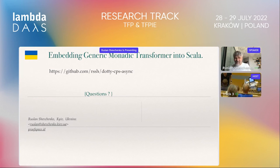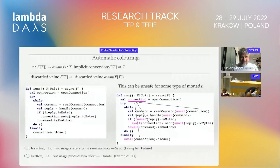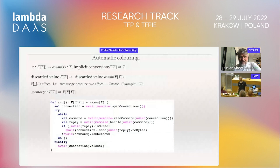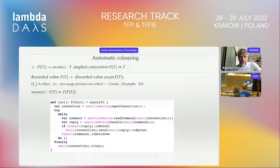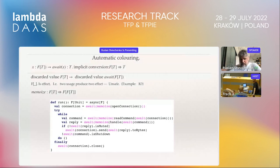Question: In the automatic colouring example, you used openConnection assigned to a local variable connection — as far as I understand, that assignment caused the connection to be memoized. If it wouldn't be assigned to a variable, if you would inline the variable connection, then it wouldn't be memoized? Answer: We analyze the usage, and we memoize only if there is a val; if there is no val, we do nothing. And if that val is used synchronously in other places later, then we memoize.